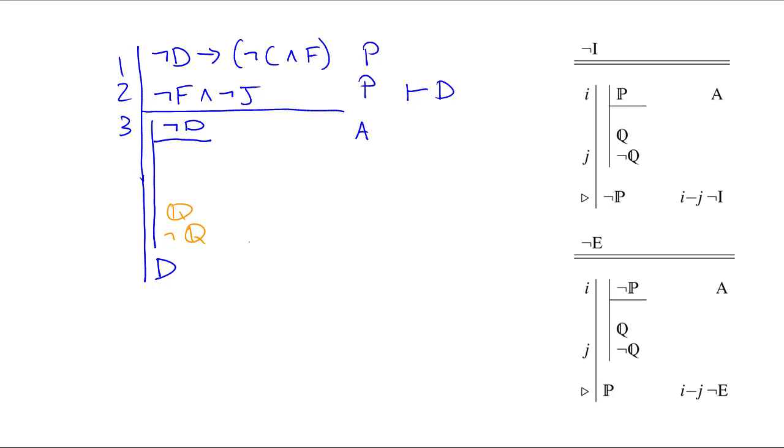Now, looking at the primary assumptions, it looks like a good candidate for Q and not Q are F and not F, right there. If I can get those, then I've got my contradiction, and I'll be allowed to remove the hook from my auxiliary assumption, which will get me D. As a matter of fact, why don't we just go right ahead and get that not F out of line 2, since it's just a nice simple conjunction elimination.